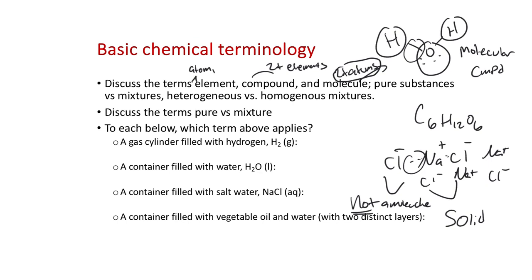We can talk about substances as being pure — you can imagine having a pure water sample. Pure is always kind of hypothetical; it's really almost impossible to have a water sample with absolutely no impurity. When I say a pure water sample, I'm talking 99%+ pure. You can have a pure substance like pure water or pure glucose. But if you dissolve sugar in water, in that case we have a mixture — a mixture is where you have two or more substances together.